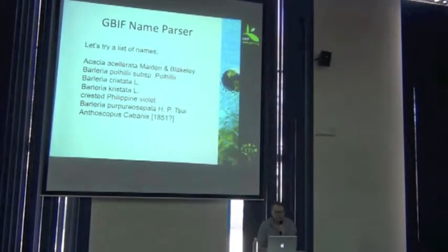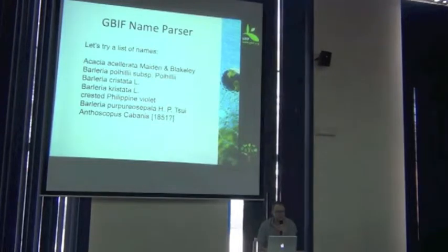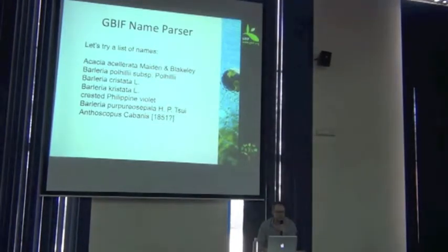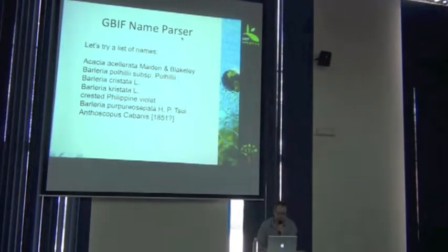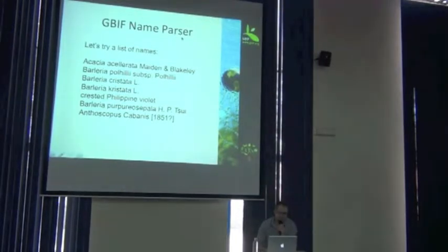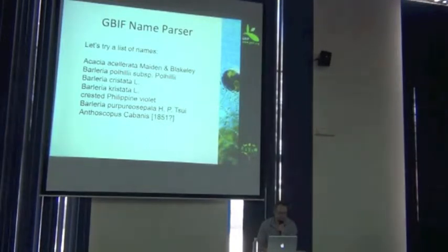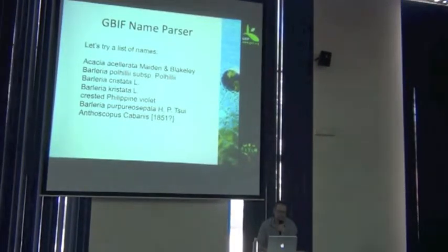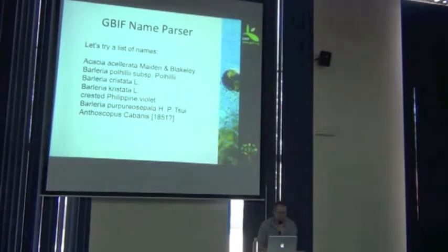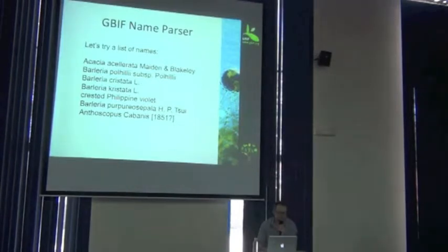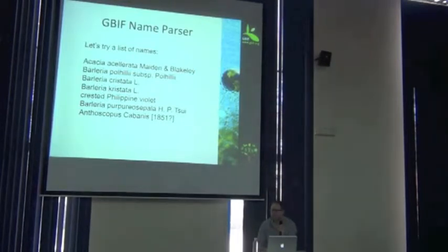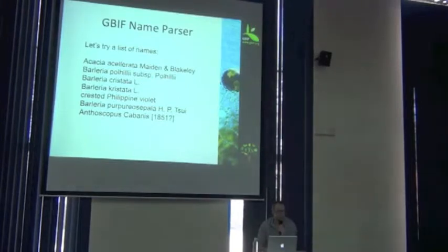Part of a well-defined scientific name is that the genus name is capitalized. So if you take, for example, the third one from the top - the genus name is capitalized. And then the species name is in lower case. This is an example of a well-formed name: you've got the genus, you've got the species.